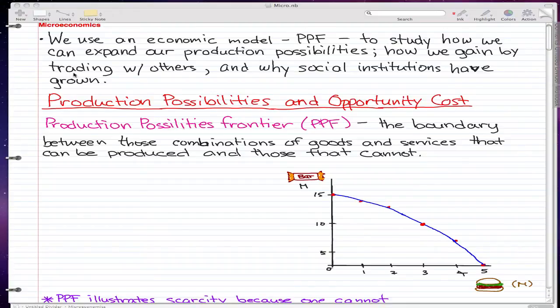I'm going to start with a talk about economic models. We use economic models such as the production possibilities frontier, which we'll focus on in this video, to study how we can expand our production possibilities, how we gain by trading with others, and how social institutions have grown. Today's video will focus on production possibilities and opportunity cost.